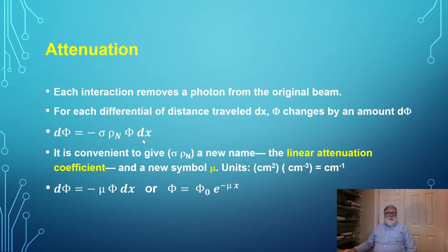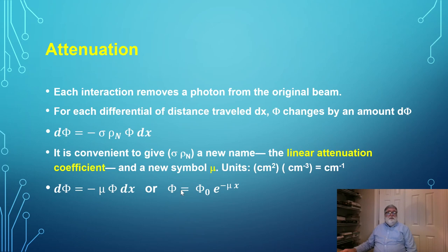What are the units? The units of sigma are square centimeters, and the number density is per cubic centimeter. So the units of mu, the linear attenuation coefficient, are per centimeter. Going back to our equation, the change in phi equals minus mu times phi times dx — it's negative because we're decreasing phi. Solving this equation tells us that phi at depth x equals the initial phi times e to the minus mu x. There is exponential attenuation as we go through matter.